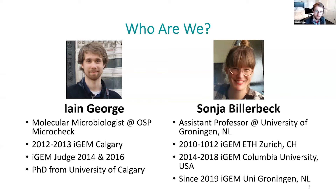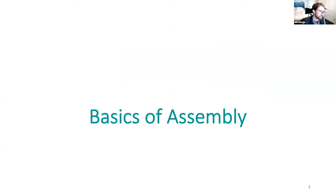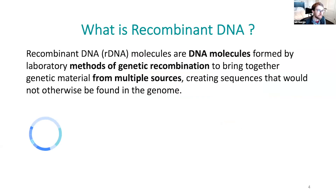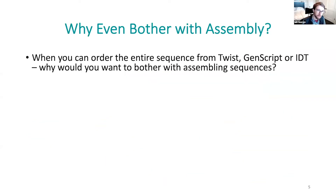Today we're here to talk about Gibson and yeast assembly. To kick things off with some basics: what we're talking about is making recombinant DNA — molecules where we use genetic recombination to take genetic material from multiple sources and create sequences that would not otherwise be found in the genome. But before we jump in, when you can order the entire sequence from somebody like Twist, GenScript, or IDT, why would you even want to bother assembling sequences yourself?